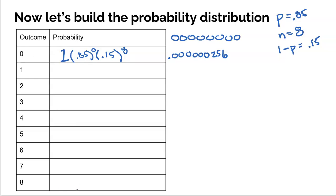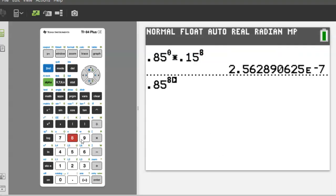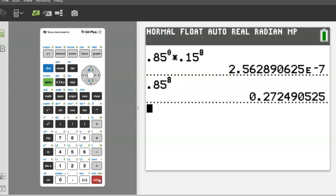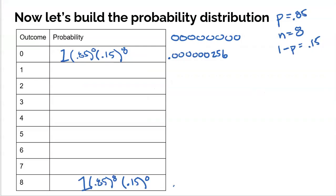Let's jump to the other end of the spectrum — making all eight of them. She's got eight shots and needs to make all of them: 0.85 to the eighth. Some students like to include 0.15 to the zero, not necessary, but it emphasizes that there are no misses. And again, there's only one way this can happen — all eight are makes. On the calculator, 0.85 raised to the eighth gives us 0.272. Why is this way more likely than missing them all? Because she makes 85% of her shots, so it wouldn't be that weird for her to make all eight.